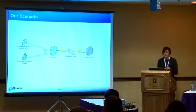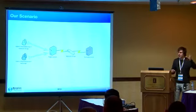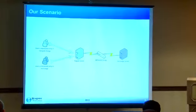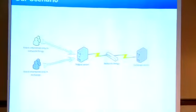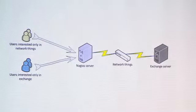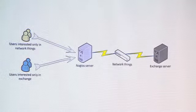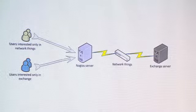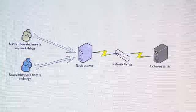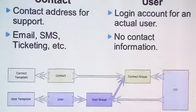As I go through the basic configuration, I want you to keep this little diagram in your head. We have a Nagios server, some network stuff, an exchange server. I presume you have more in your network, but let's keep it simple. We have some users who are interested in our network things and some users interested in our exchange server.